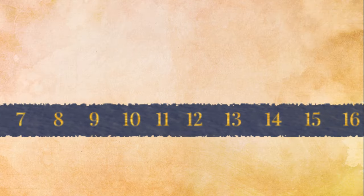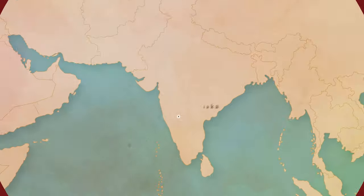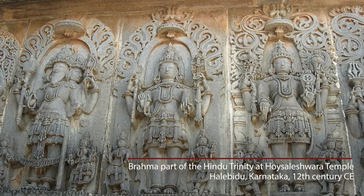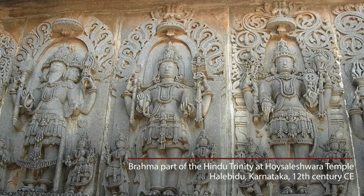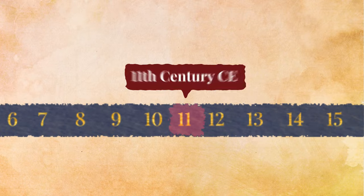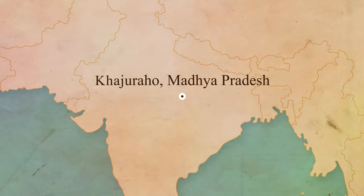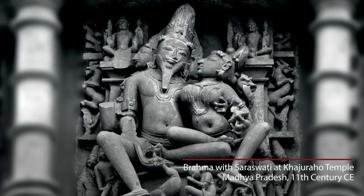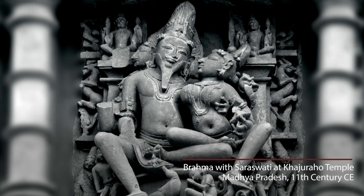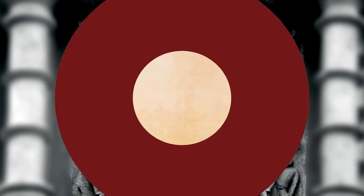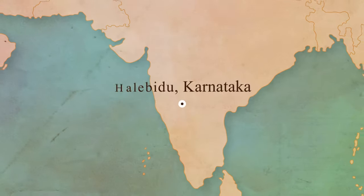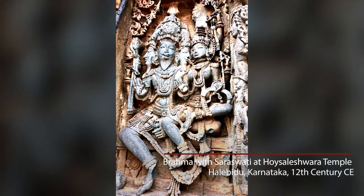He's one of the Hindu trinity. So you have images of Brahma, Vishnu, and Shiva standing next to each other. You have images in Khajuraho and Hoysala art around the 10th and 11th century, which show him seated with Saraswati by his side. So now he has a consort. He is seen as equal — as the creator, with Vishnu as the preserver and Shiva as the destroyer.